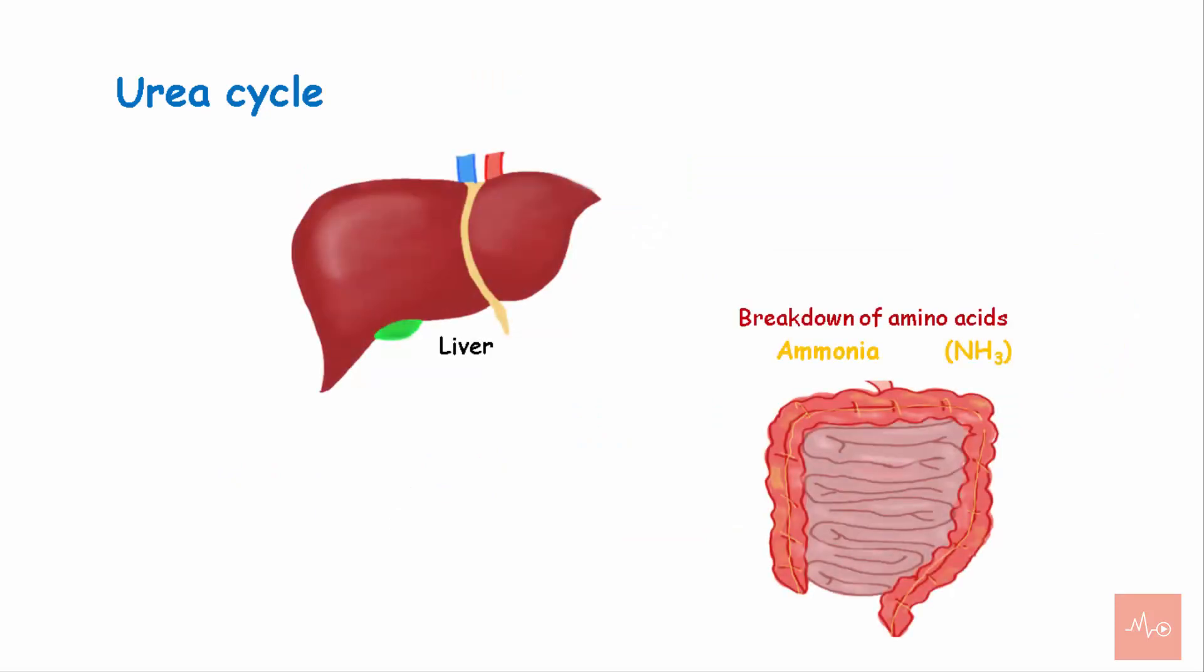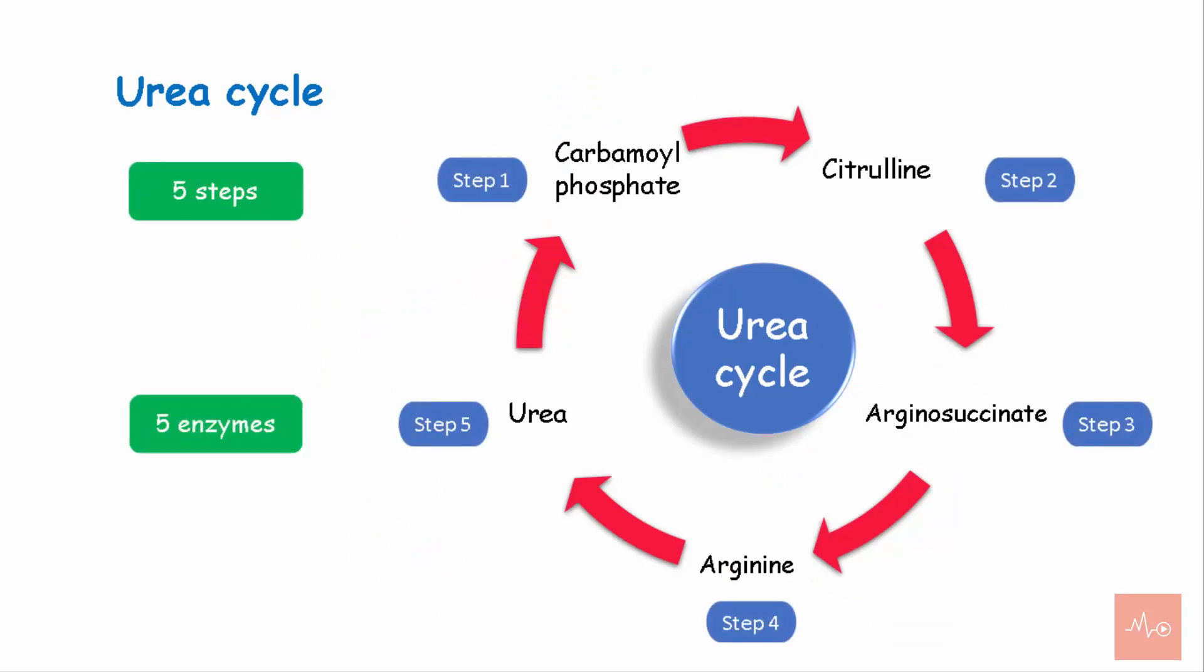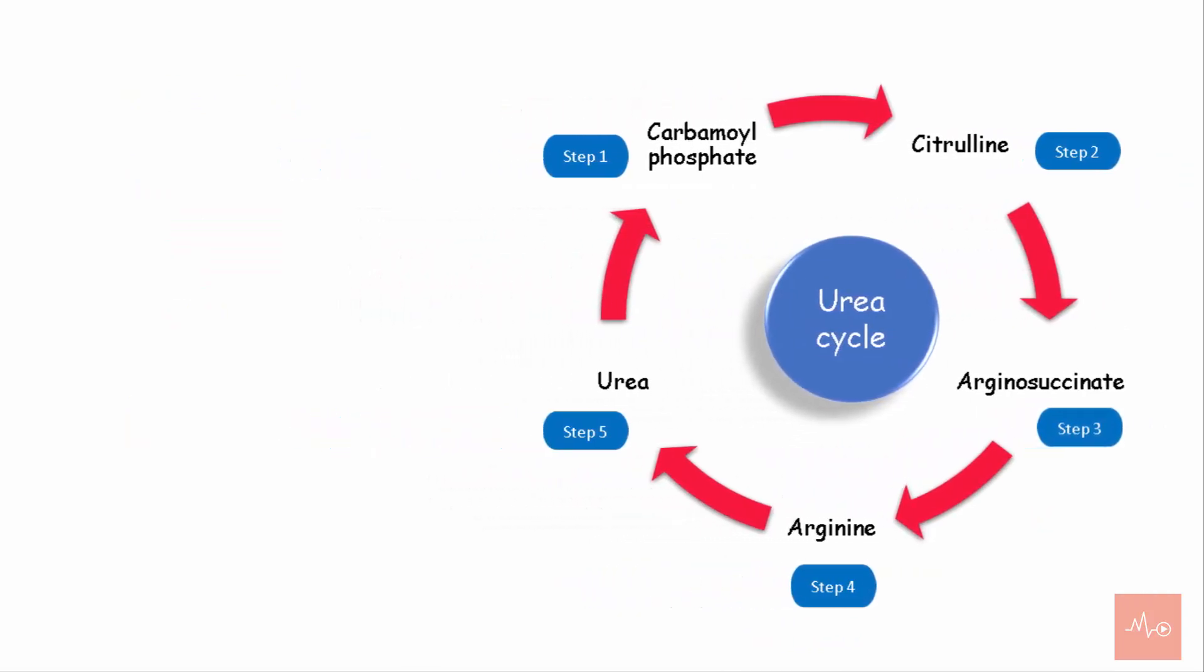The ammonia formed from the breakdown of amino acids is transferred to liver and converted to urea, which is excreted by the kidneys in urine. Urea cycle is a five-step process involving five different enzymes. The first two steps take place in the mitochondria and the next three in the cytoplasm. Coming to the steps in urea cycle, step 1...